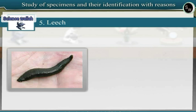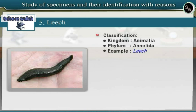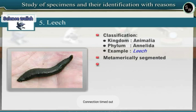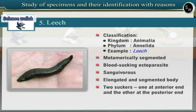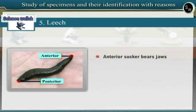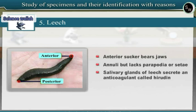Specimen 5: Leech. Observe a preserved specimen of leech. Leech belongs to the phylum Annelida of Kingdom Animalia. Since the body is metamerically segmented and there are nephridia as excretory organs, leech is included under phylum Annelida. Leech is a blood-sucking ectoparasite, also called Sanguivorous. It has an elongated segmented body with two suckers — one at the anterior end and one at the posterior end. The anterior sucker bears jaws enclosing the mouth. The body consists of annuli but lacks parapodia or setae. The salivary glands of leech secrete an anticoagulant called Hirudin.